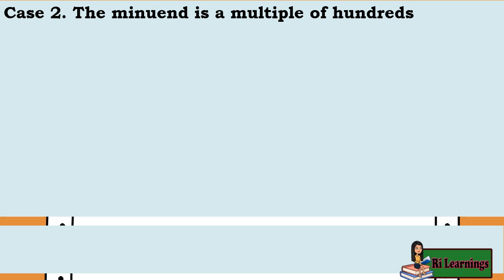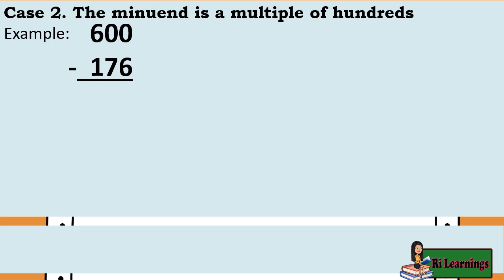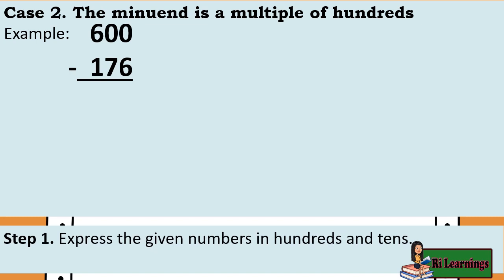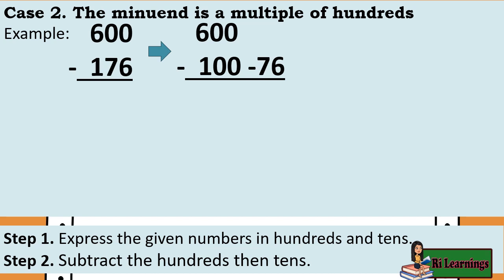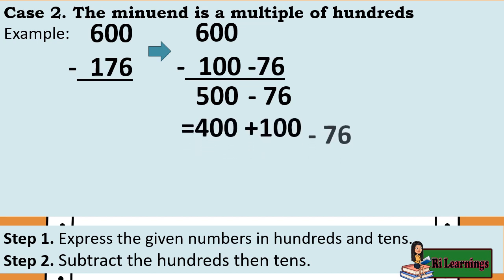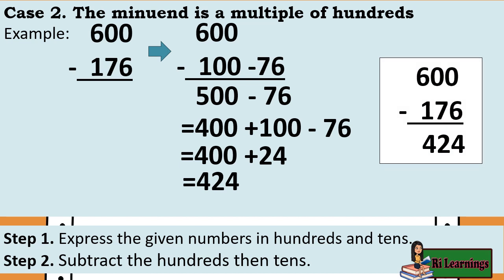Case 2: The minuend is a multiple of hundreds. Example: 600 minus 176. Solution — Step 1: Express 176 in hundreds and tens: 176. Step 2: Subtract the hundreds then tens: 600 minus 100 equals 500. Express 500 into 400 and 100. 100 minus 76 equals 24. 400 plus 24 equals 424. Answer: 600 minus 176 equals 424.